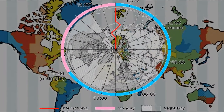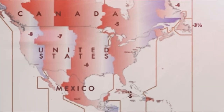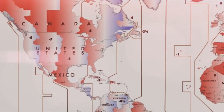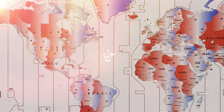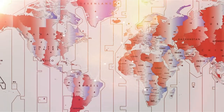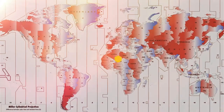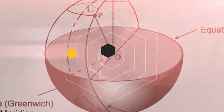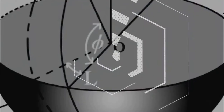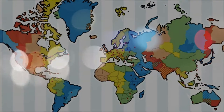The International Meridian Conference in Washington DC, USA, adopted a proposal in October 1884. The proposal stated that the prime meridian for longitude and timekeeping should be one that passes through the center of the transit instrument at the Greenwich Observatory in the United Kingdom. The conference established the Greenwich meridian as the prime meridian and Greenwich Mean Time, GMT, as the world's standard time.